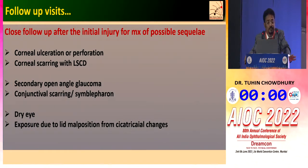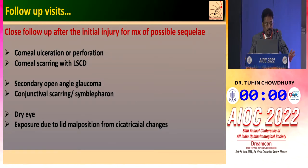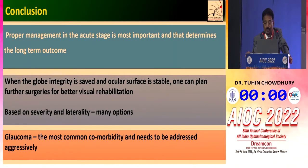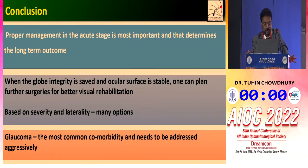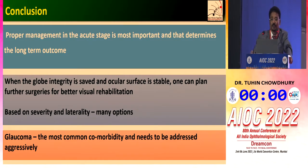During follow-up visits, one should look for corneal ulceration or perforation, corneal scarring with limbal stem cell deficiency, secondary open-angle glaucoma, conjunctival scarring and symblepharon, dry eye, and lid malposition causing exposure. To conclude: proper management in the acute stage is most important and determines long-term outcome. When globe integrity is saved and surface is stable, further surgeries for visual rehabilitation can be planned. For unilateral cases, conjunctival autograft or SLAT is appropriate; for bilateral cases, allogenic SLAT or K-Pro. Glaucoma is the most common comorbidity and must be addressed aggressively. The moderator adds: if uncertain, wash the eye and perform tarsorrhaphy - this alone significantly helps. In acid injuries, even with low initial IOP, watch for pigmentation or hypopyon in the anterior chamber as a sign of impending glaucoma.